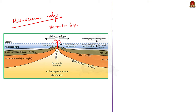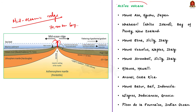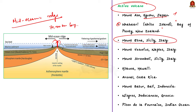These are all the various types of volcanoes. Before concluding, let us remember some of the most active volcanoes present in the Ring of Fire region. Some examples of active volcanoes include: Mount Aso Volcano in the Kyushu province of Japan; Whakaari or White Island in the Bay of Plenty, New Zealand; Mount Etna in Sicily, Italy; Mount Vesuvius in Naples, Italy; and Mount Stromboli in Sicily, Italy. The remaining active volcanoes are displayed on screen for your reference.